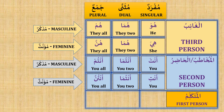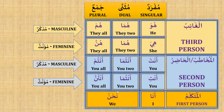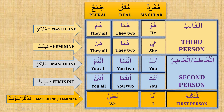And the last one, al-mutakallim, first person: ana — I; and nahnu — we. These two can be used for both male and female. As we see, there is no special form for dual — nahnu can be used for both dual and plural. They are mudhakkar and mu'annath, masculine and feminine. There is no separate female form; they can be used for male and female.